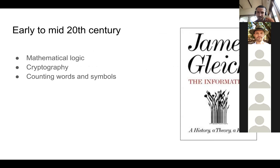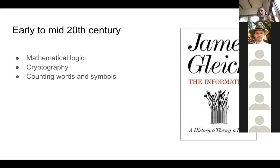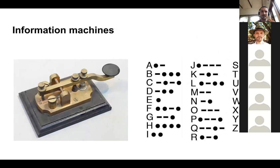Setting the historical scene: in the early to mid-20th century there were great advances in mathematical and formal logic, a growing practical need for cryptography, and a gradually rising phenomenon of people counting words and symbols and looking at statistical patterns in language. Drawing on James Gleick's book 'The Information,' these parallel developments help explain how information theory arose.